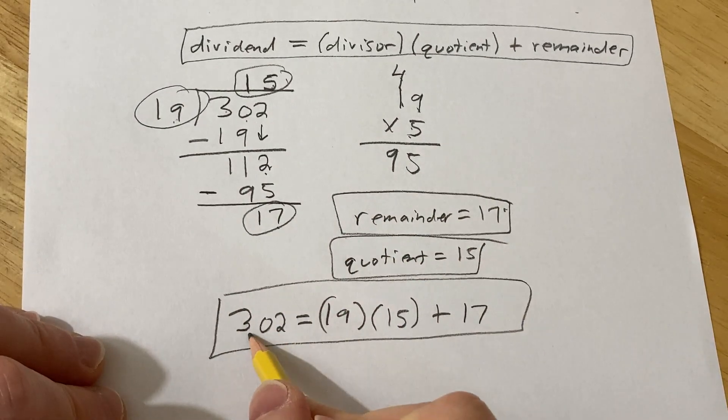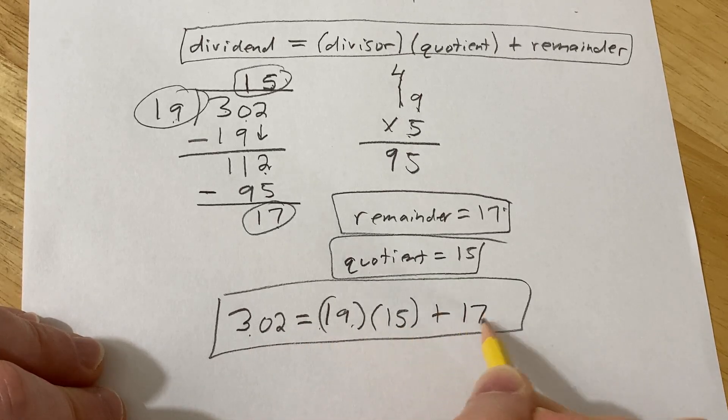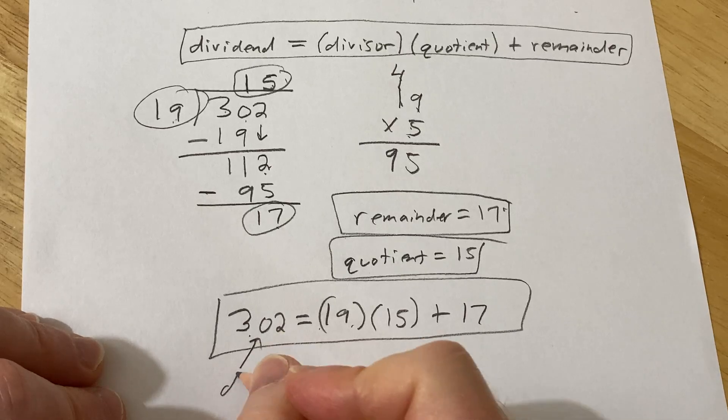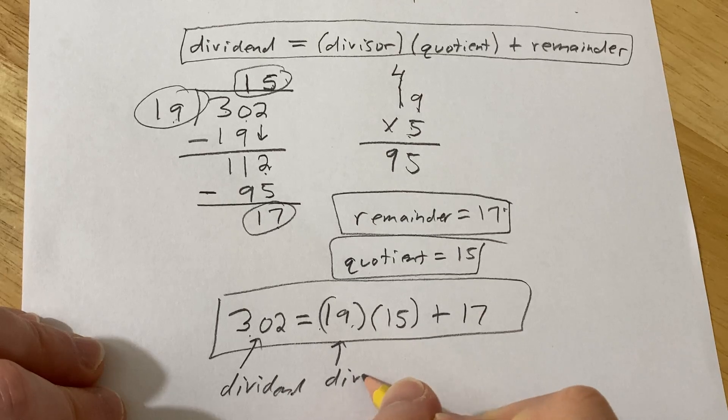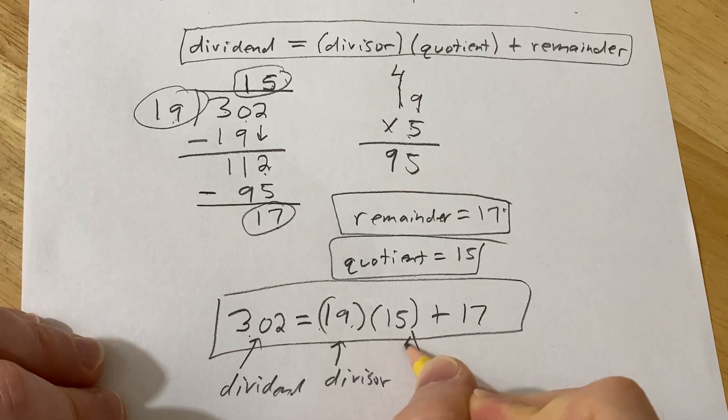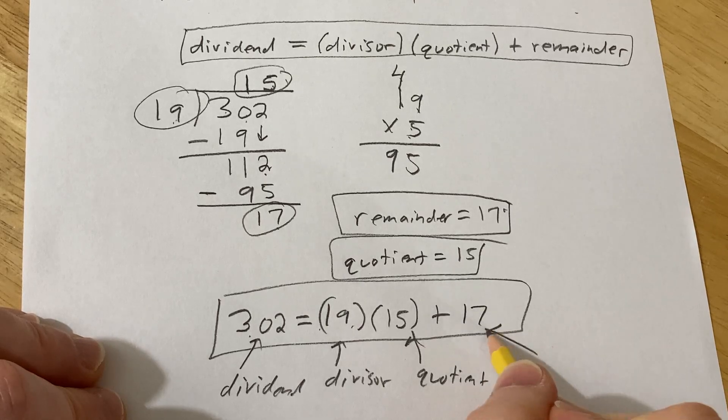Again, it's dividend equals divisor times quotient plus remainder. This is the dividend, this is the divisor, this is the quotient, and this is the remainder.